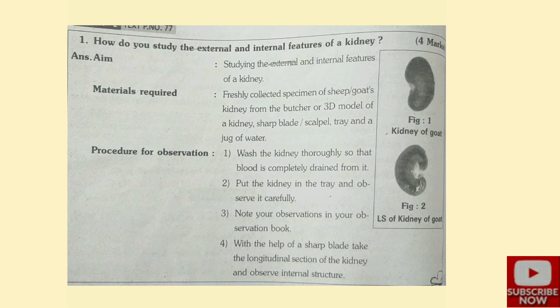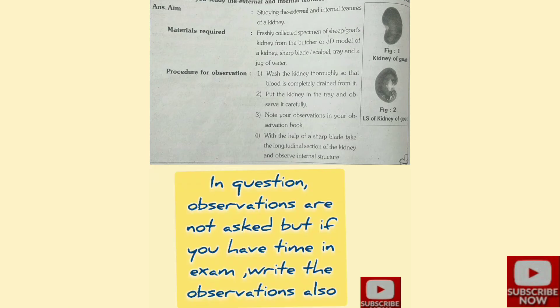Second, put the kidney in the tray and observe it carefully. Third, note your observations in your observation book. Fourth, with the help of a sharp blade, take the longitudinal section of the kidney and observe the internal structure. In the exam, draw two figures: figure one is the kidney of a goat externally, and figure two is the LS of a goat's kidney showing the internal structure.